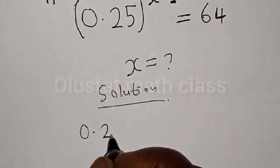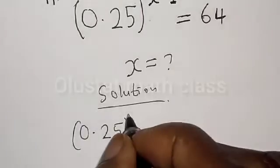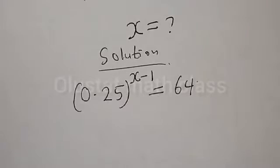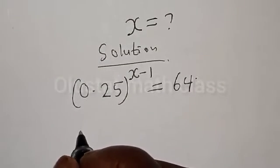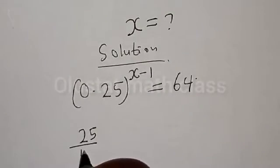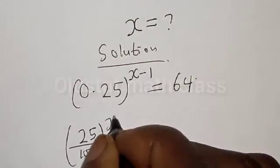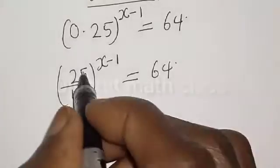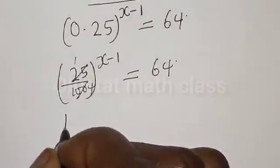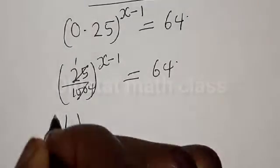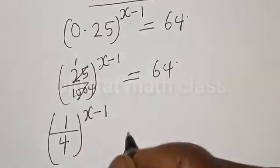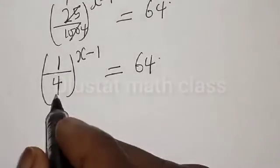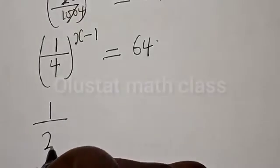0.25 raised to power s minus 1 is equal to 64. Now, 0.25 is the same as 25 divided by 100, raised to power s minus 1, is equal to 64. Simplifying 25 over 100 gives us 1 divided by 4, raised to power s minus 1, is equal to 64. Then 1 over 4 can be expressed as 1 divided by 2 squared.